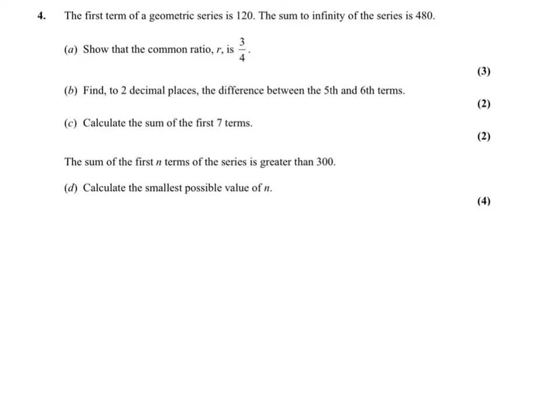Question 4. It says the first term of a geometric series is 120, sum to infinity of the series is 480. So we need to use this initially. The sum to infinity, which is a over 1 minus r, equals 480. We also know that a... hold on, I'll just rub that out actually, I've already got a, haven't I? So actually we've got 120 over 1 minus r equals 480. You should be able to solve that, and it will find that this is your answer. If you don't get that, go back and check it.